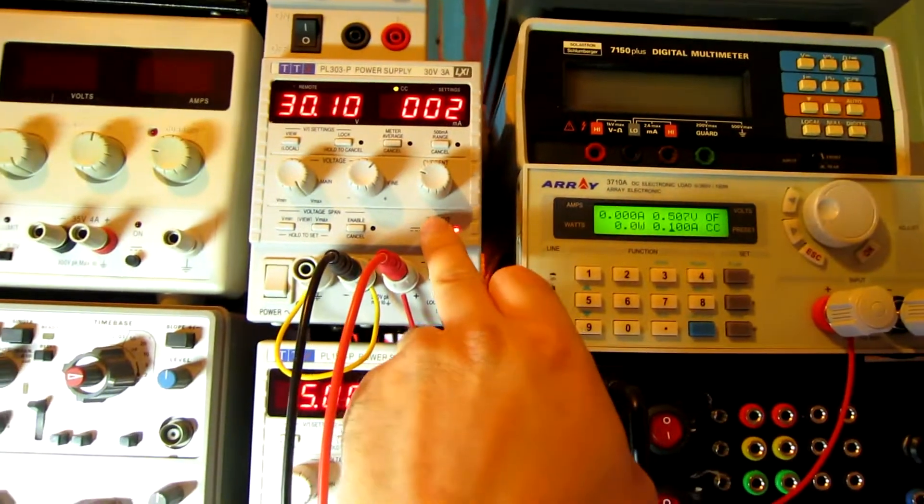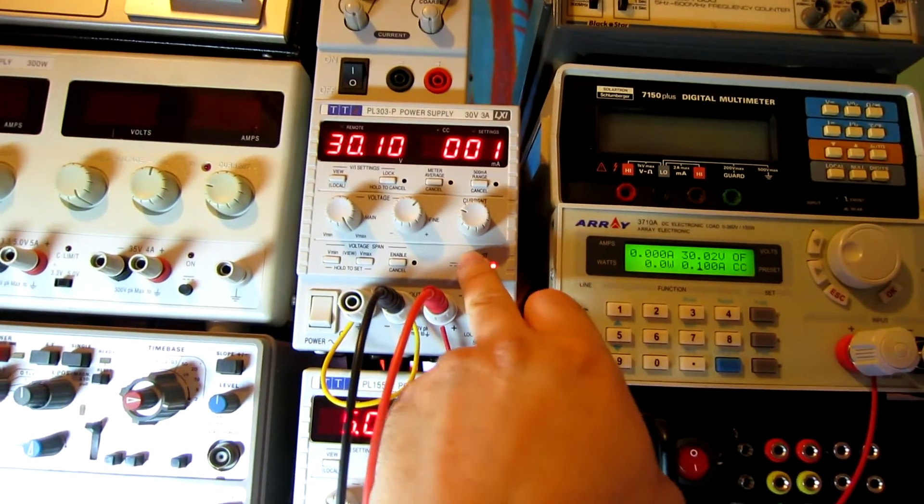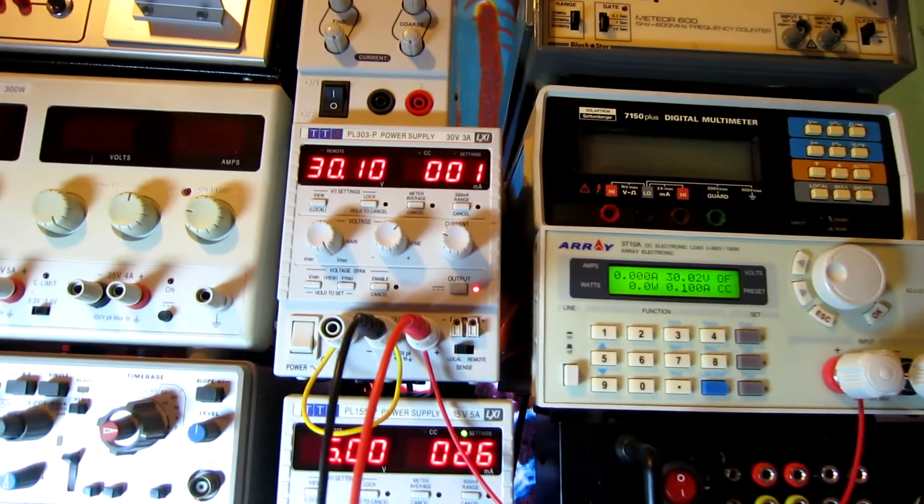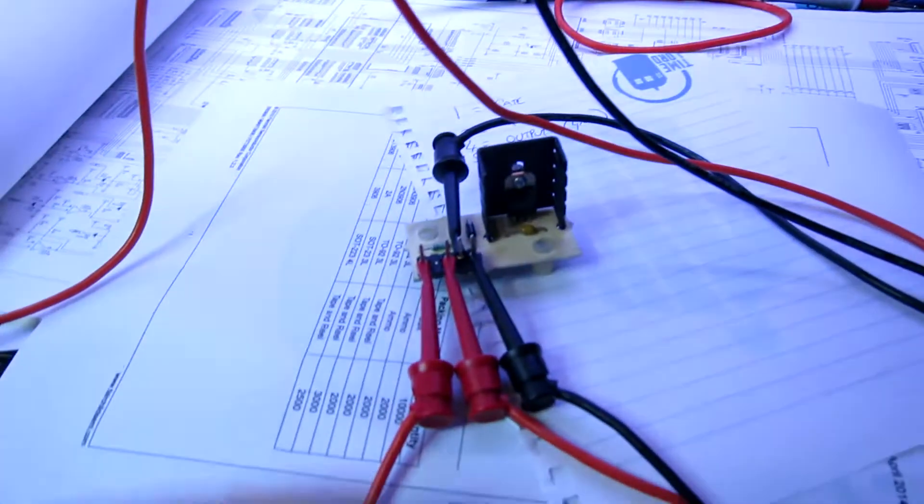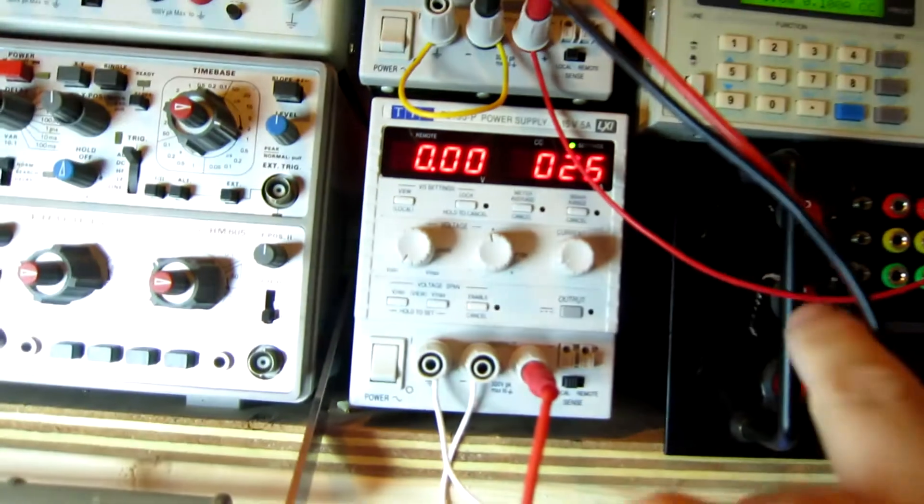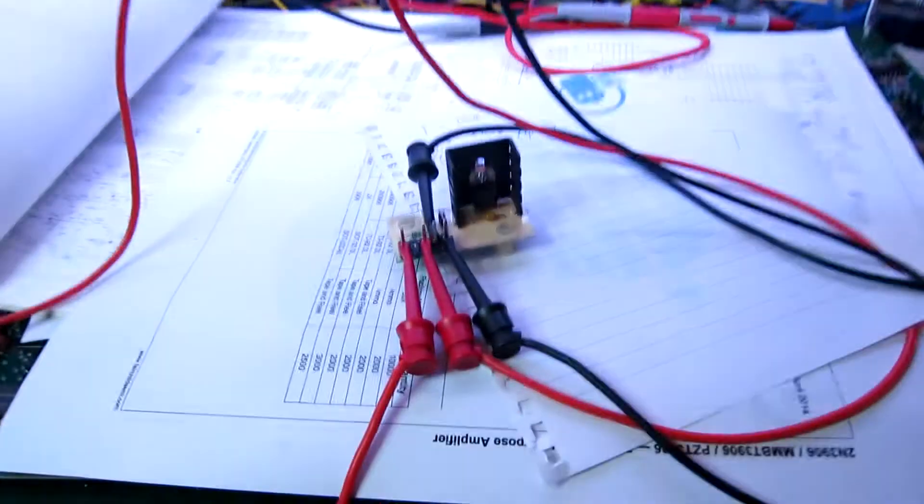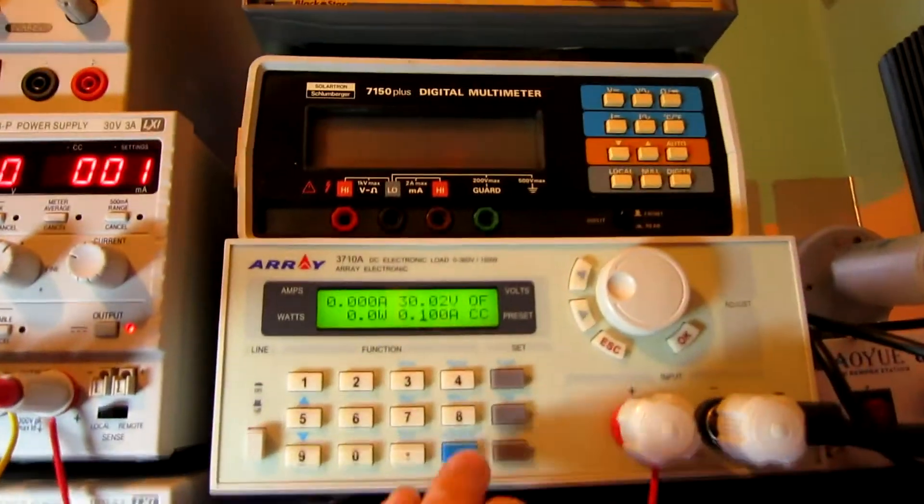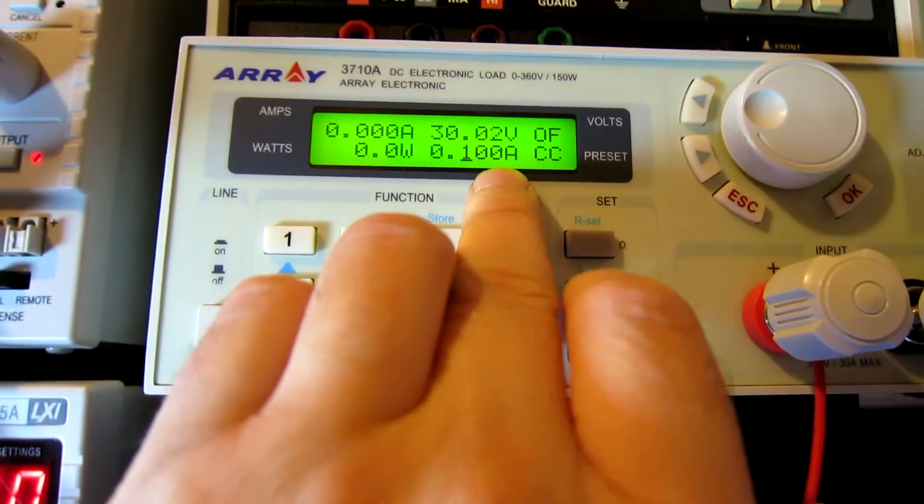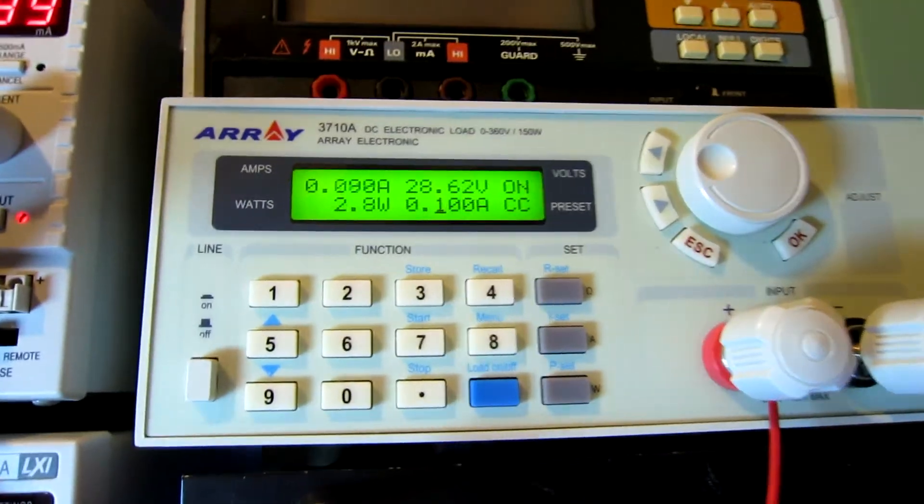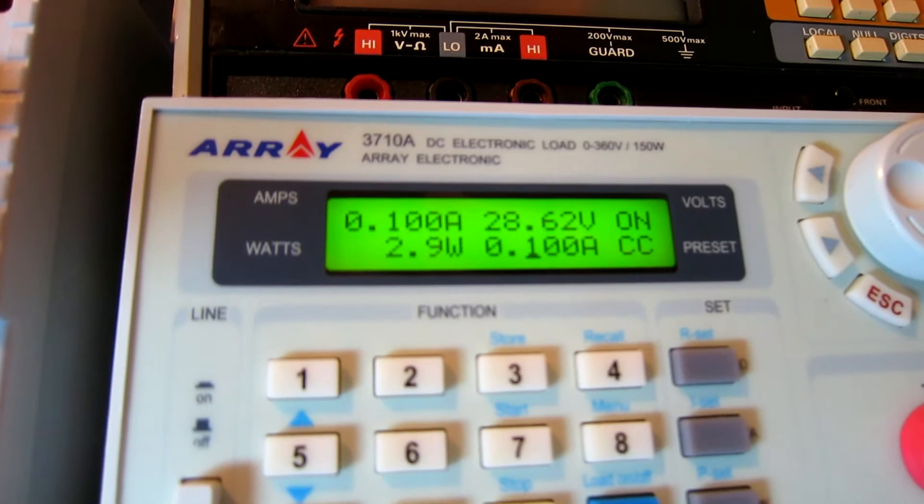What we're going to do is switch on the 30 volt supply. We can see it's on, it's not draining current at the minute, and this should be off. Let's just set this to zero. We've got the power supply set to zero, this should be off.